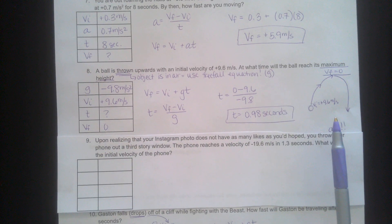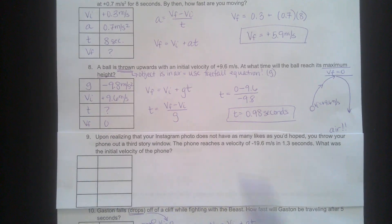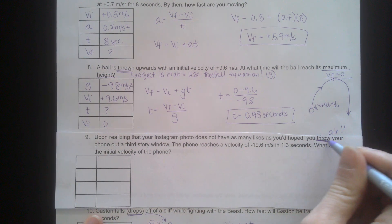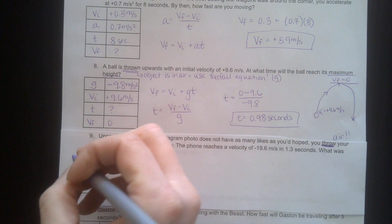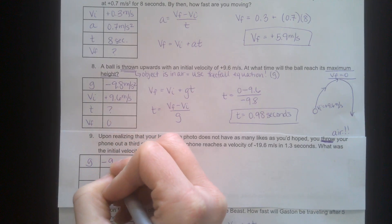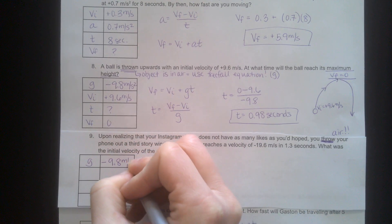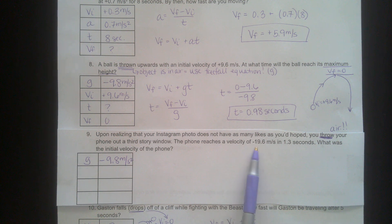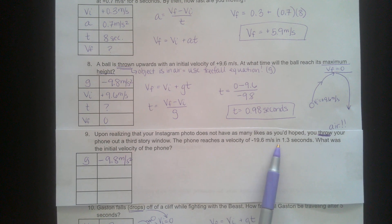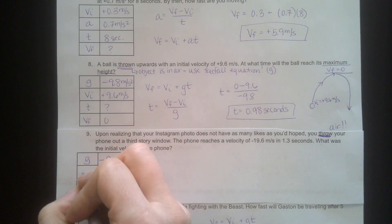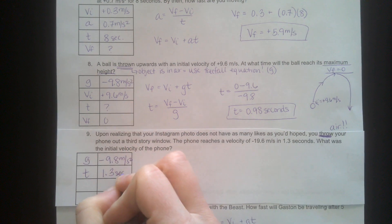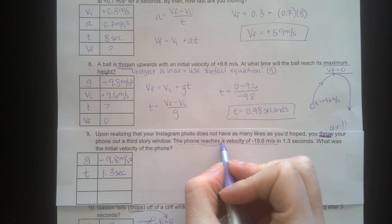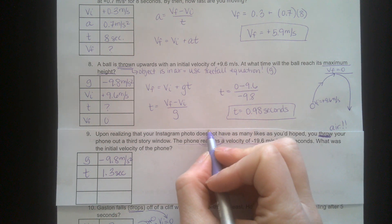This next one I haven't done yet, so we'll do it together. Upon realizing your Instagram photo does not have as many likes as you'd like, you throw, that's a keyword, that means air, so G is involved. I'm going to put that right into my known variables box. Third story window. The phone reaches a velocity of negative 19.6 meters per second in 1.3 seconds.